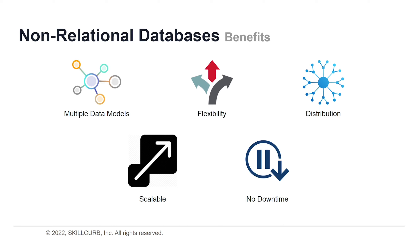Relational databases can scale, but not easily or cheaply, because they are built with a traditional master-slave architecture, which means scaling up by using bigger and bigger hardware servers rather than scaling out via sharding. Sharding means dividing a database into smaller chunks across multiple hardware servers instead of a single large server, and this leads to operational and administration headaches. Instead, look for a NoSQL database with a masterless peer-to-peer architecture where all nodes are the same.